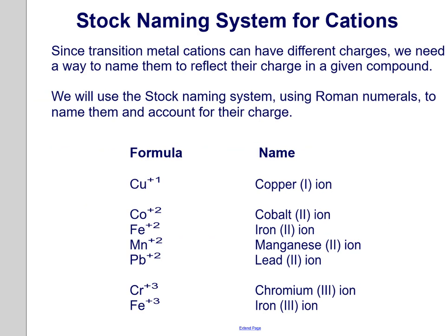The stock naming system for cations: since transition metal cations can have different charges, we need a way to name them to reflect their charge in a given compound. We'll use the stock naming system, using Roman numerals, to name them and account for their charge. For example, copper with a charge of positive 1 is called copper(I). Cations with a charge of positive 2 include cobalt(II), iron(II), and manganese(II). Similarly, chromium(III) and iron(III) for a charge of positive 3.